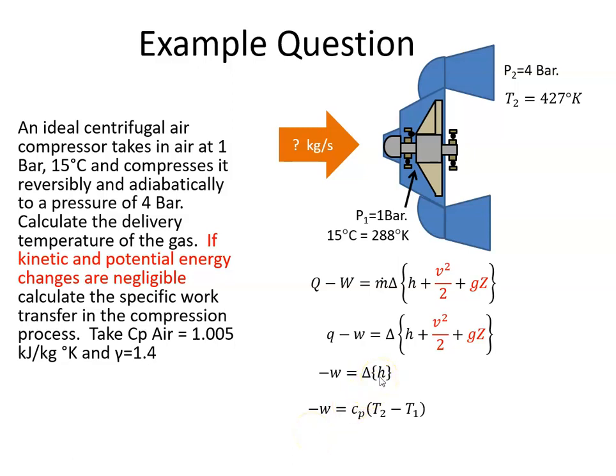So the change in enthalpy is Cp times T2 minus T1. So I'll plug in the values. I have 1.005 kilojoules per kilogram Kelvin. The temperature of the output was 427.9, so I just rounded that up to 428, minus 288. And when I multiply that all out, I get 140.7 kilojoules per kilogram.